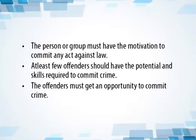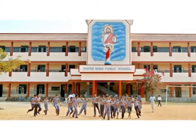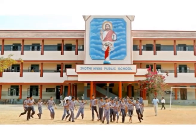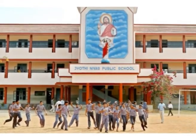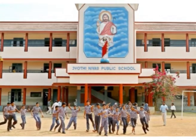There are various factors that lead to commission of crime: the person or group must have the motivation to commit any act against law; at least a few offenders should have the potential and skills required to commit crime; and the offenders must get an opportunity to commit crime. There are basically four types of prevention. First is primary prevention. It deals with individual and family level factors which lead to criminal tendencies. Attachment to school and involving children in pro-social activities decrease the chances of criminal tendency. Family-level factors, including effective parenting skills, directly lead to reduction in criminal behavior.